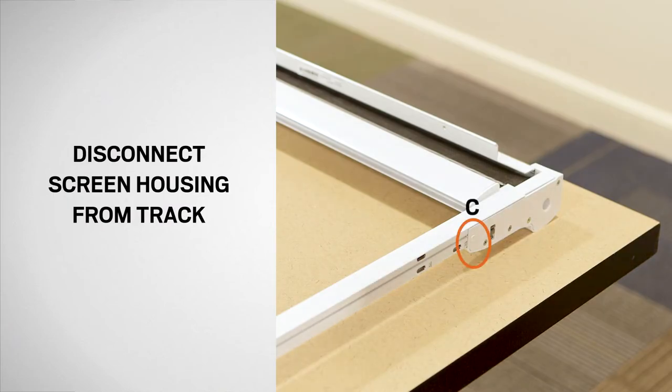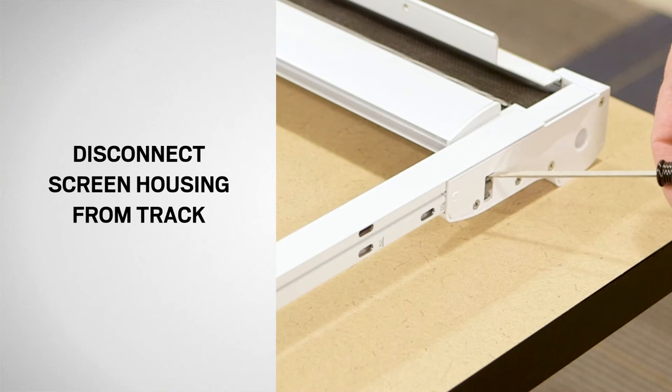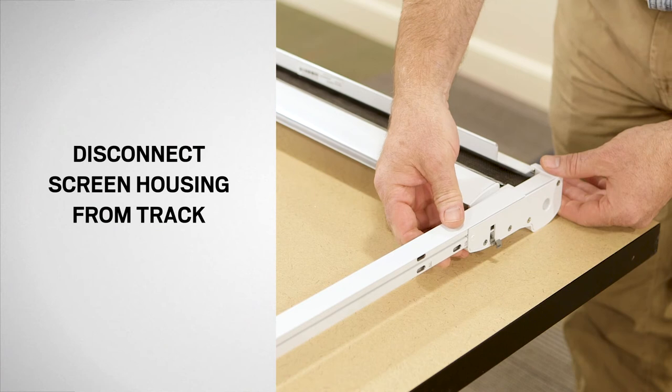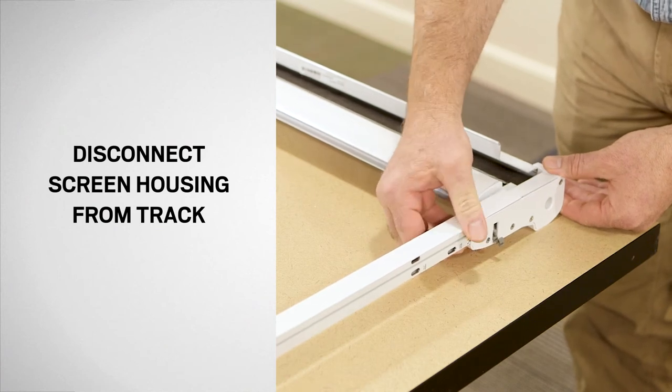To disconnect the screen track from end cap C, first open the fastener clip by applying downward pressure with a flat blade screwdriver. Then slide the screen track out of end cap C.